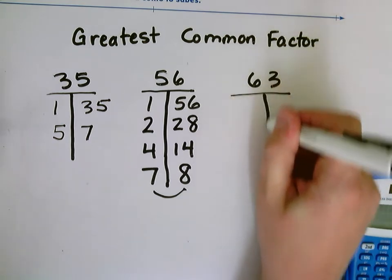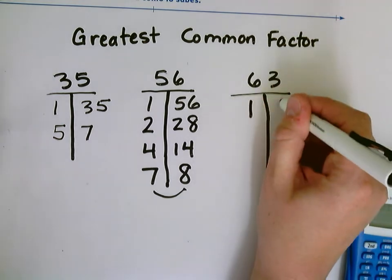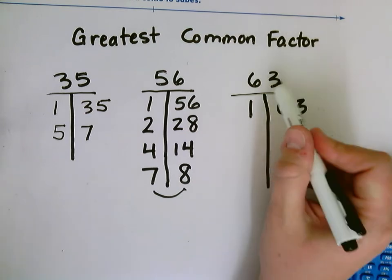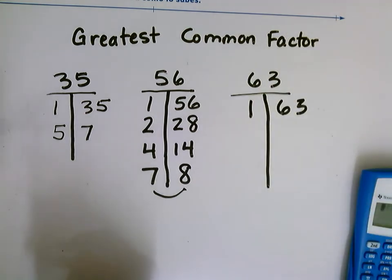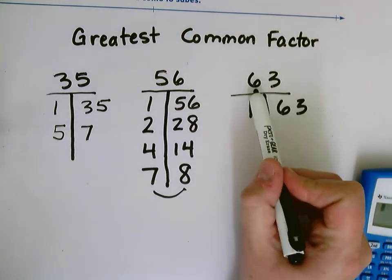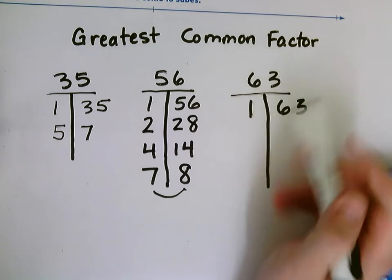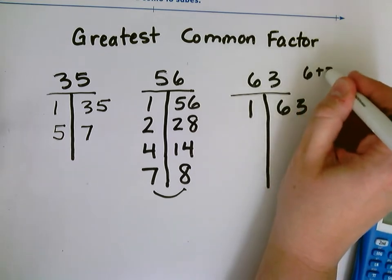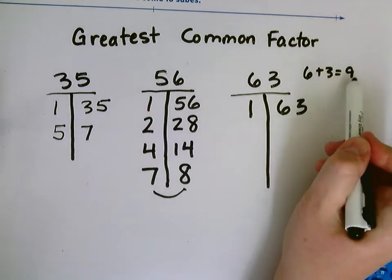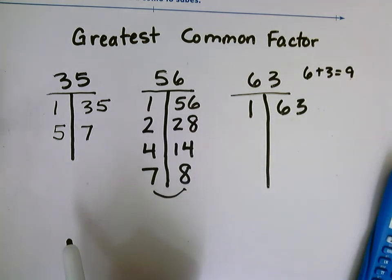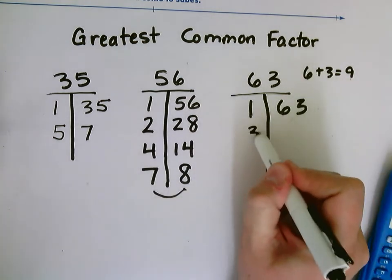For 63, I have 1 times 63. It is not an even number, so 2 will not be a factor. If I add these together, 6 plus 3 equals 9, and 3 is a factor of 9. So that 3 is going to be a factor of 63.